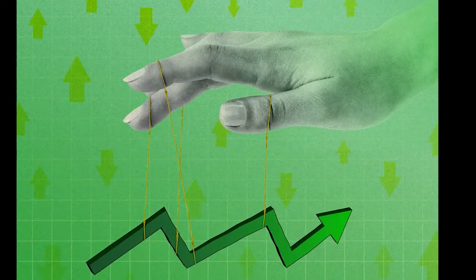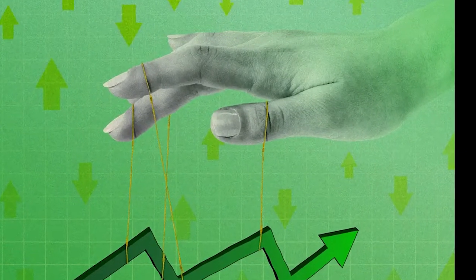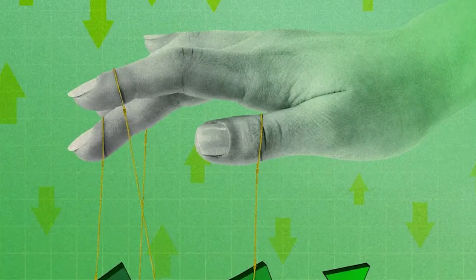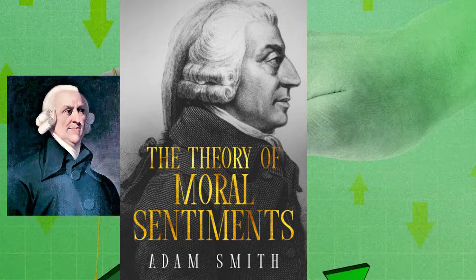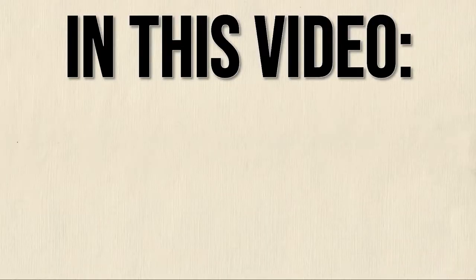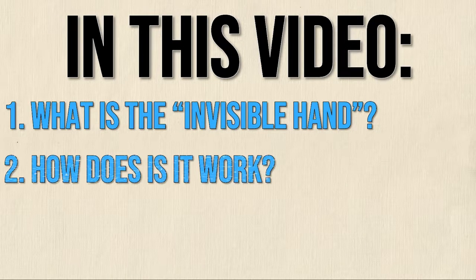The invisible hand is an important concept in economics and it was first introduced by Adam Smith in his 1759 book The Theory of Moral Sentiments and then later popularized by his 1776 book The Wealth of Nations. In this video we will discuss what the invisible hand is, how it works, and why it's important.